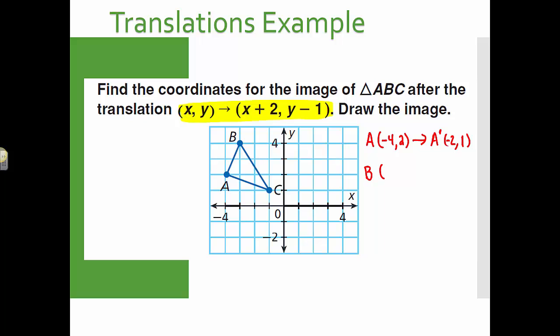My original coordinates for B are negative 3, 4. So for B prime, I need to take this and add 2. I get negative 1. And I need to take this and subtract 1 and I get 3. And lastly, C is at negative 1, 1. So to get to C prime, I need to take negative 1 and add 2. That puts me at 1. And then I need to take 1 and subtract 1 and that puts me at 0.